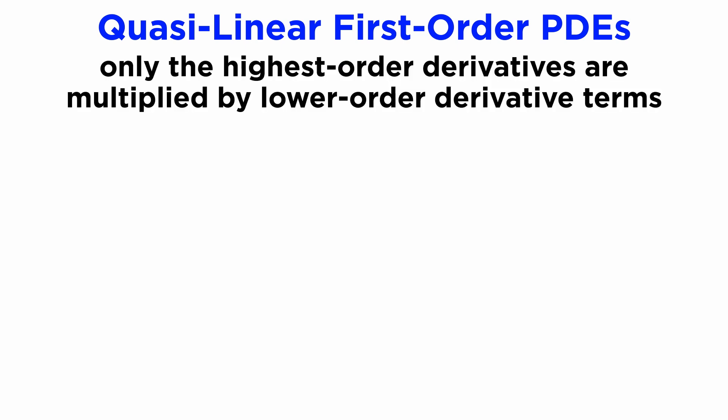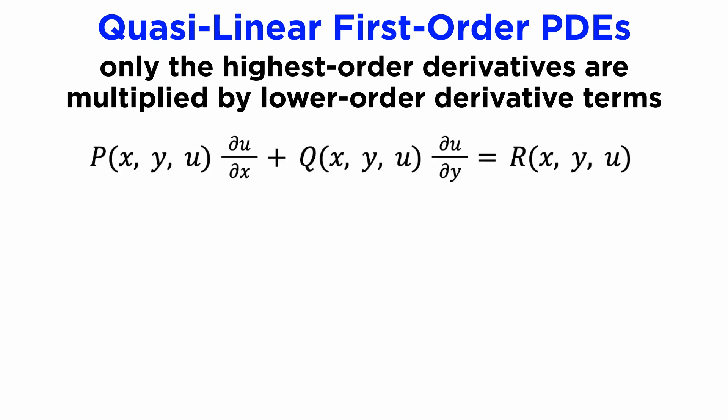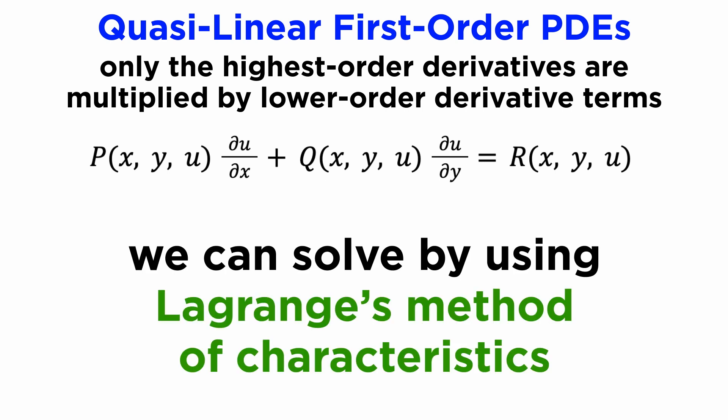As mentioned in the previous tutorial, a quasi-linear PDE is any PDE where only its highest order derivatives are multiplied by lower order derivative terms, and the lower order derivatives or terms can be non-linear in any way. For a first order quasi-linear PDE, the most general form is P(x, y, u) times ∂u/∂x plus Q(x, y, u) times ∂u/∂y equals R(x, y, u), where P, Q, and R are functions. The general way we can solve this for our function is called Lagrange's method of characteristics.